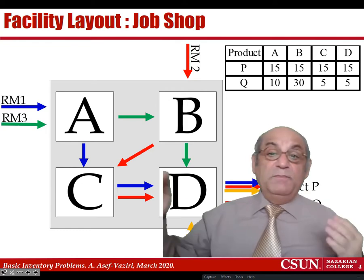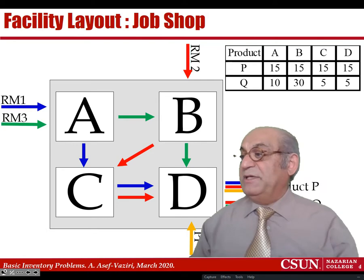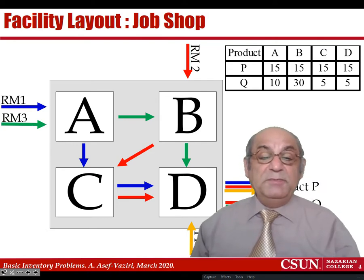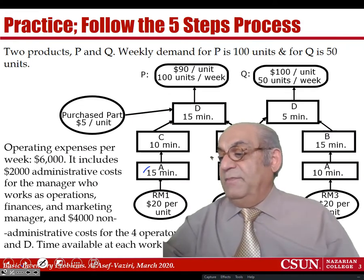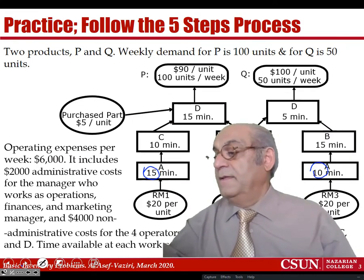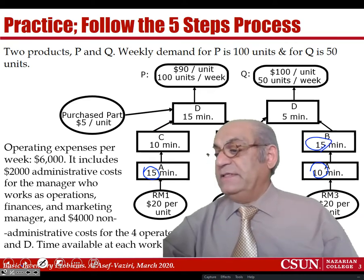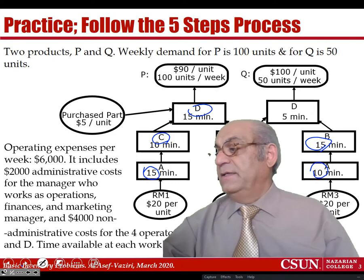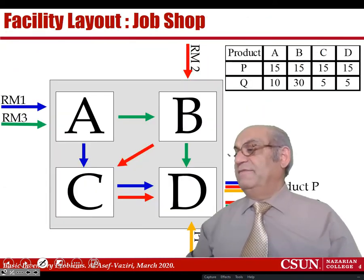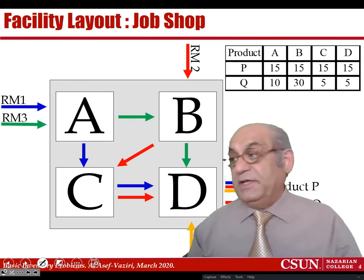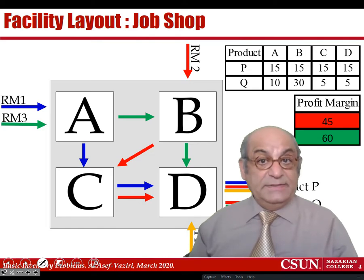If I compute how much time each part spends in each department — A, B, C, and D — and add those minutes together, I get the resource consumption per product. We have already computed that the profit margins are $45 for P and $60 for Q.